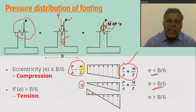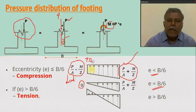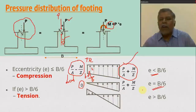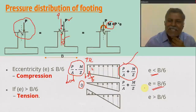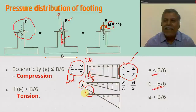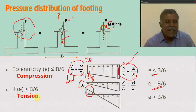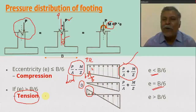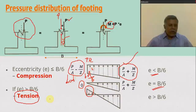You can verify this by substituting the values in the equation, where area equals breadth into thickness, M equals P into e, and for a rectangular section Z equals bd²/6. Substituting and equating to zero gives e equal to b/6 or d/6. This is the proof. If the minimum pressure goes negative, it means eccentricity is greater than b/6, and the footing will be subjected to tension.